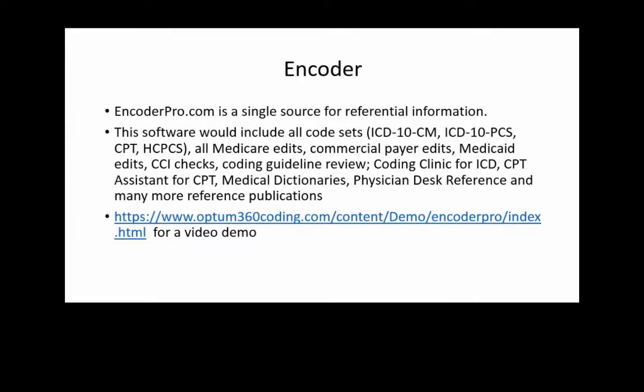For example, there's a gender edit where it's checking to make sure that the claim being presented doesn't have a male having a hysterectomy, or a female having a prostate operation. Edits can follow gender, age, national and local coverage determinations — all kinds of rules around the claims. If a claim comes through everything, it's called a clean claim, meaning it hasn't hit any edits and can now be processed to assign the DRG.